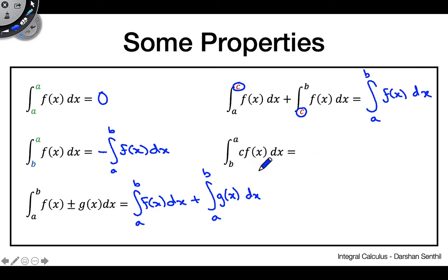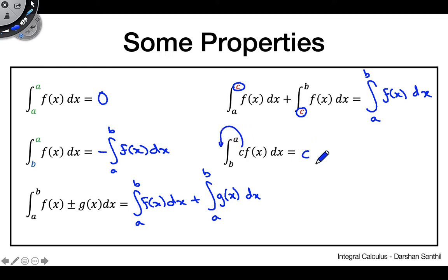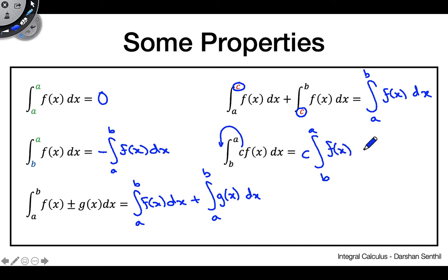The last basic property is also analogous to differential calculus: if your function is multiplied by some constant, you can pull that constant out in front of the integral. So the integral from b to a of c·f(x) dx equals c times the integral from b to a of f(x) dx.